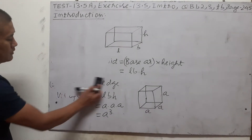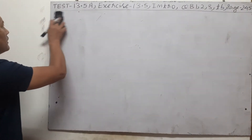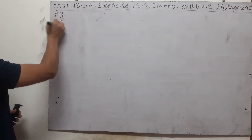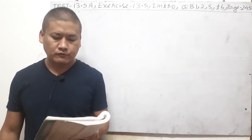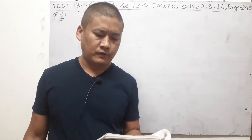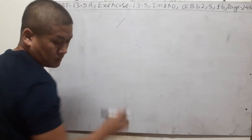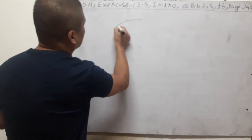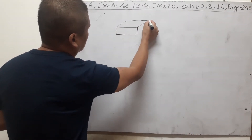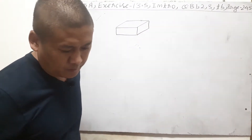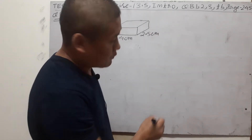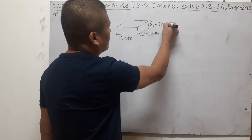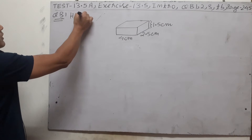We're going to use these two formulas, so memorize them. Now we'll do question B1, page 245. The question: a matchbox measures 4 cm by 2.5 cm by 1.5 cm. What will be the volume of a packet containing 12 such boxes? So draw along with me the matchbox — its length is 4 cm, breadth is 2.5 cm, and height is 1.5 cm.